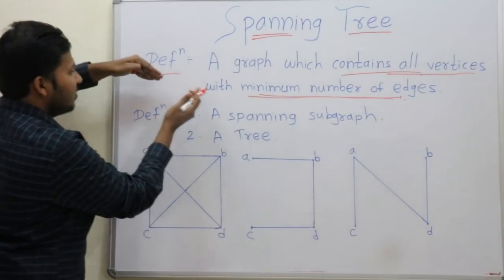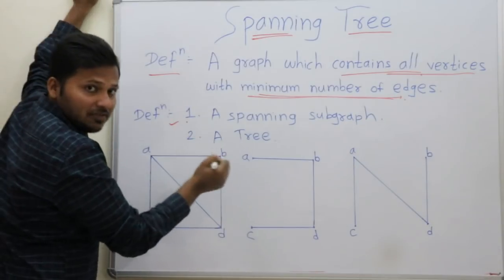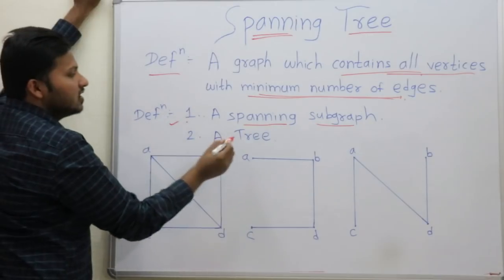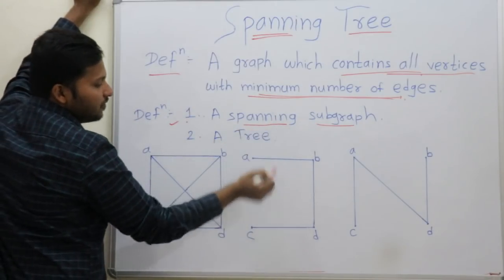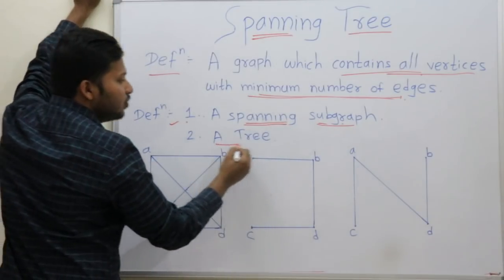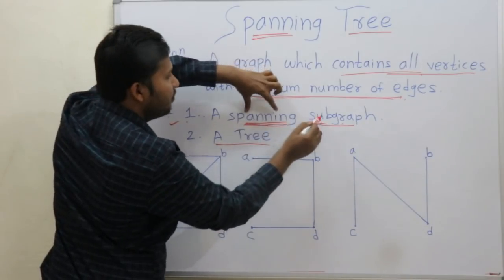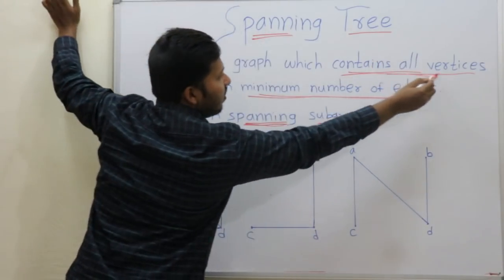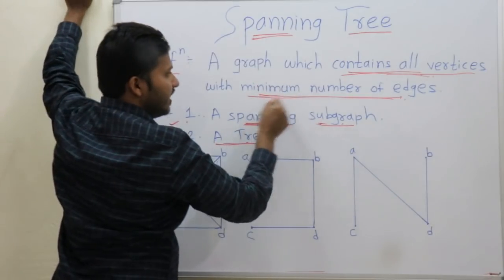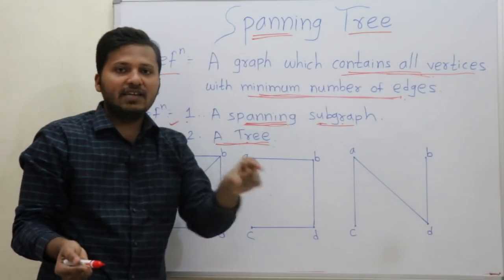That can also be written in another way. Here is another definition: a spanning subgraph. The first condition is that the graph should be a spanning subgraph and it should be a tree. A spanning subgraph means it should contain all vertices, and a tree means it should contain minimum number of edges, meaning there should not be any cycle.